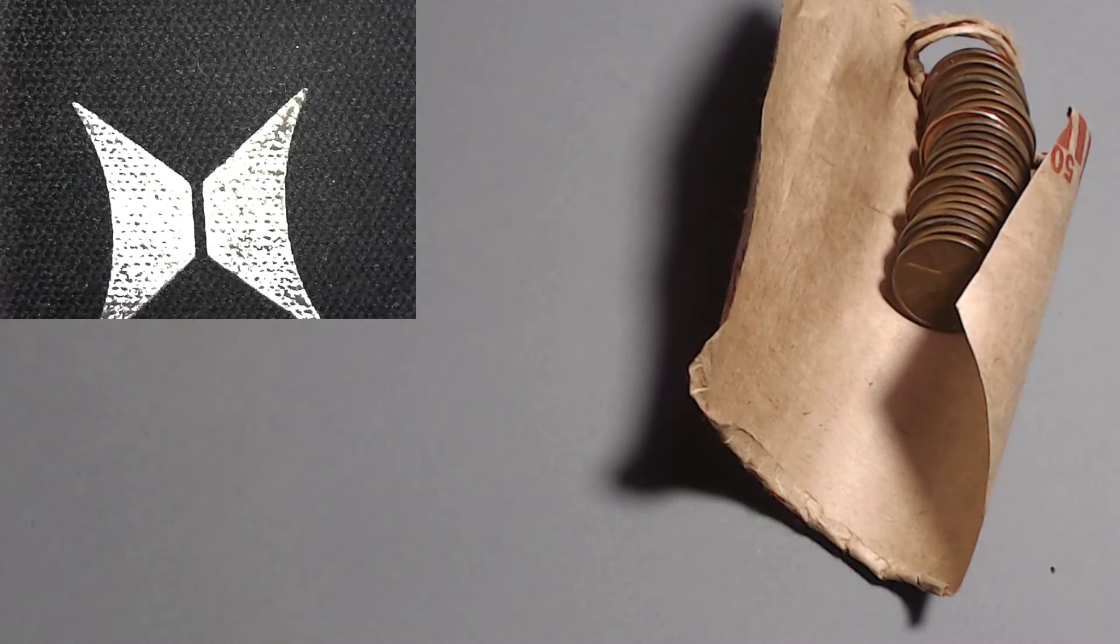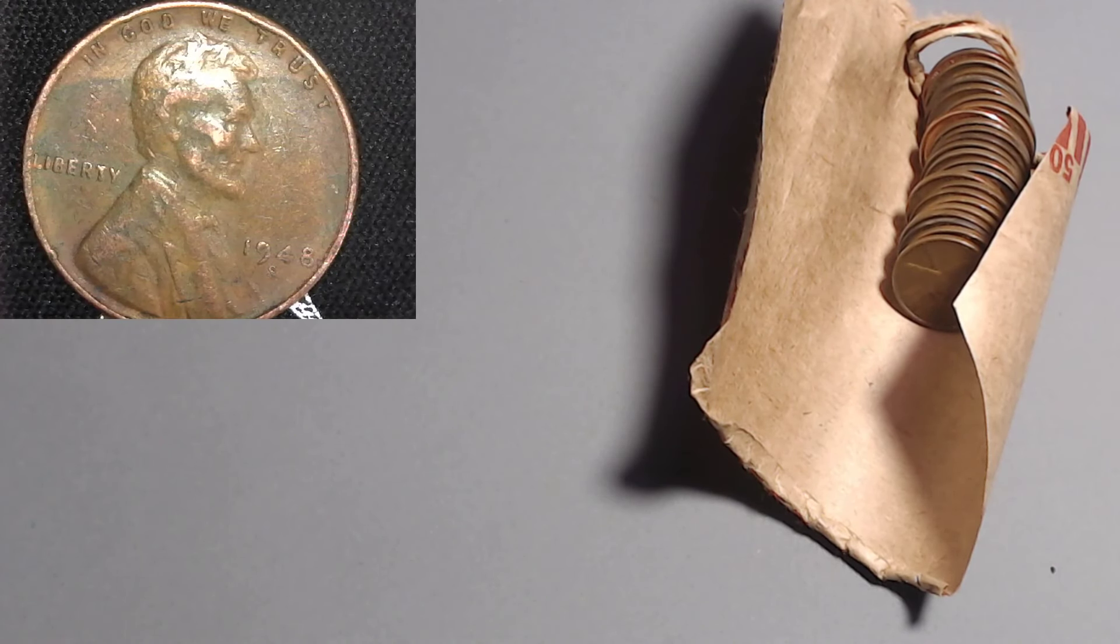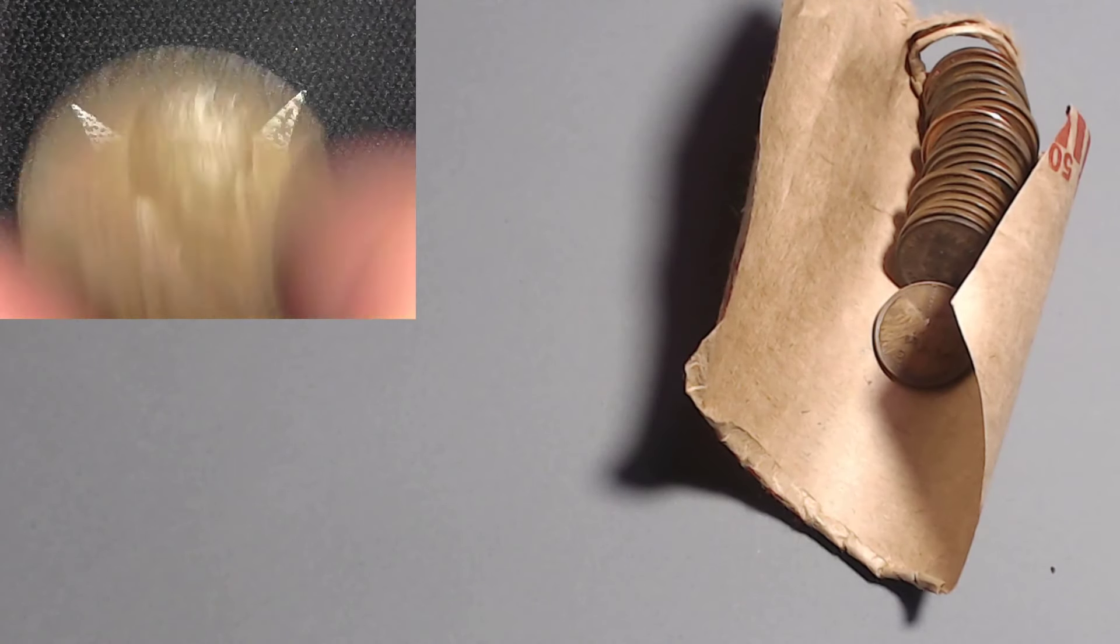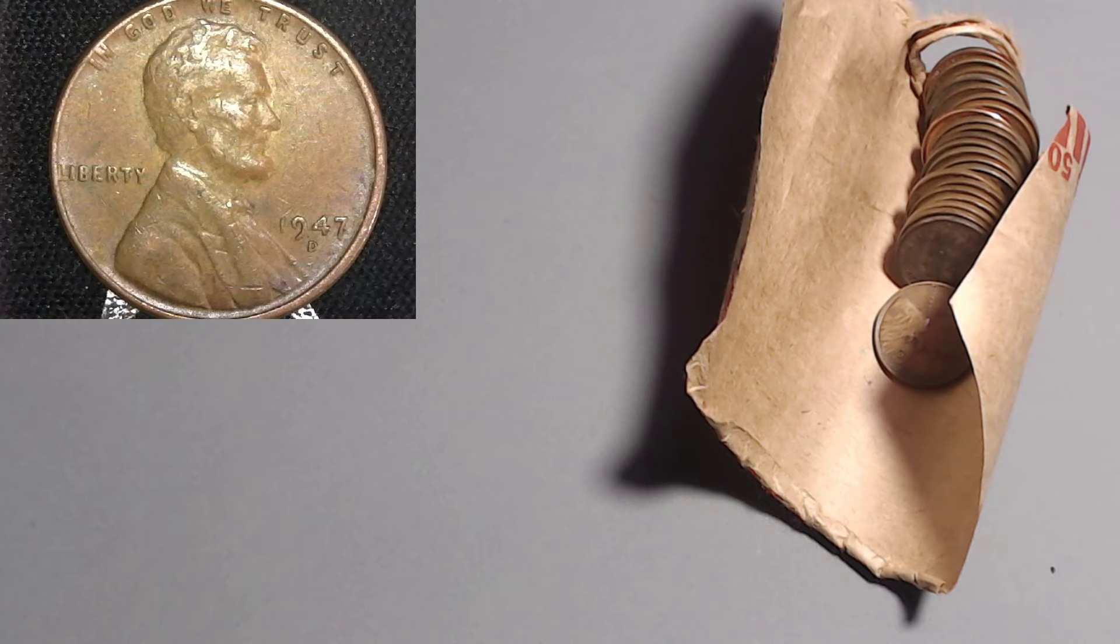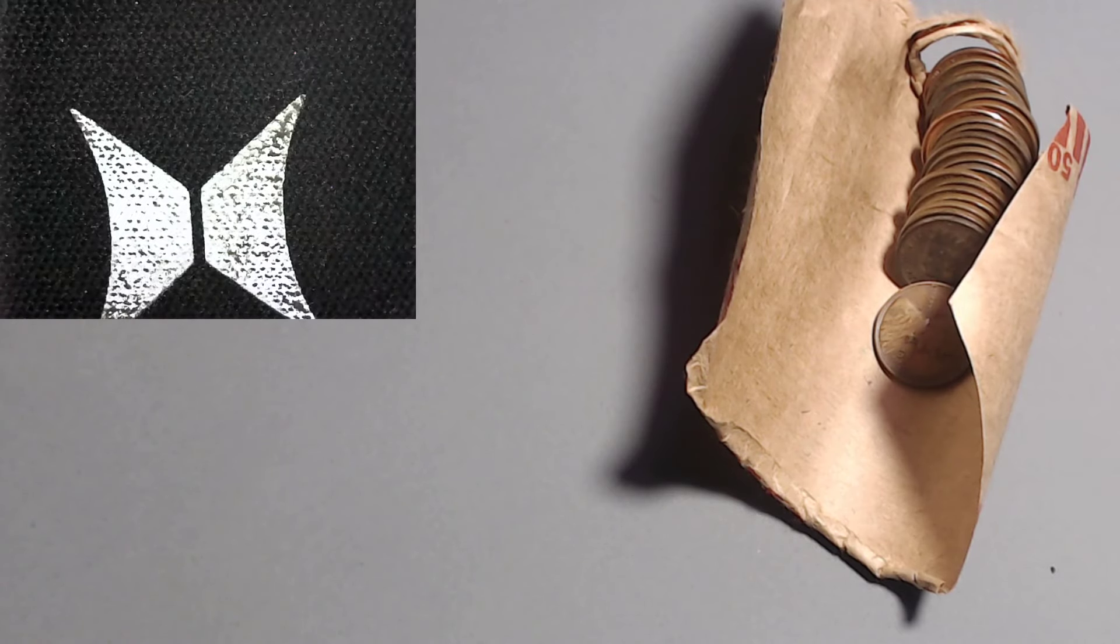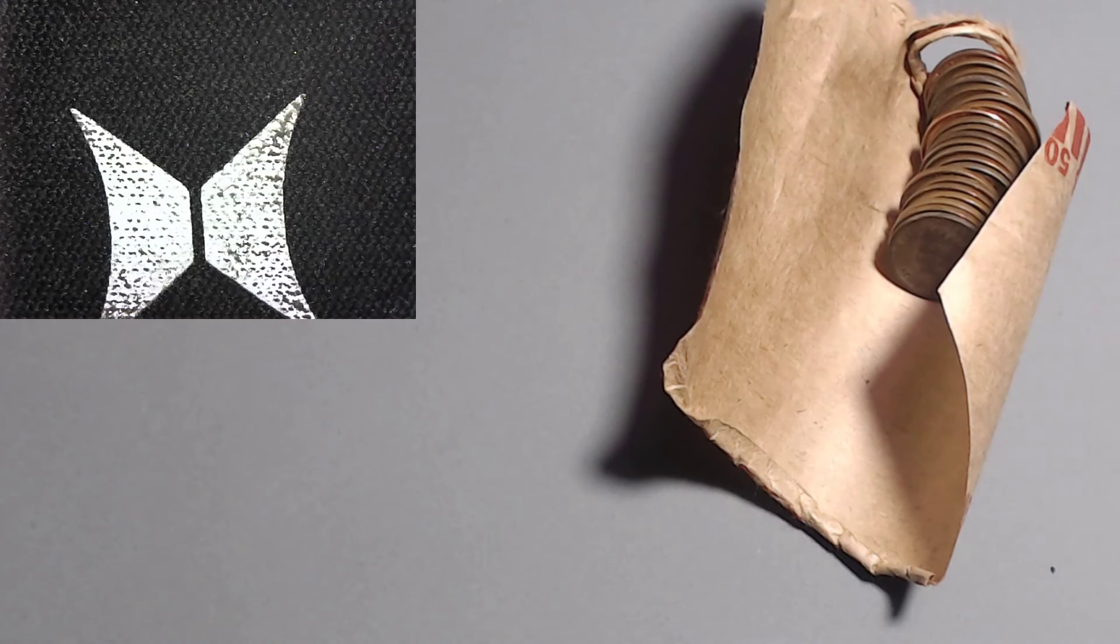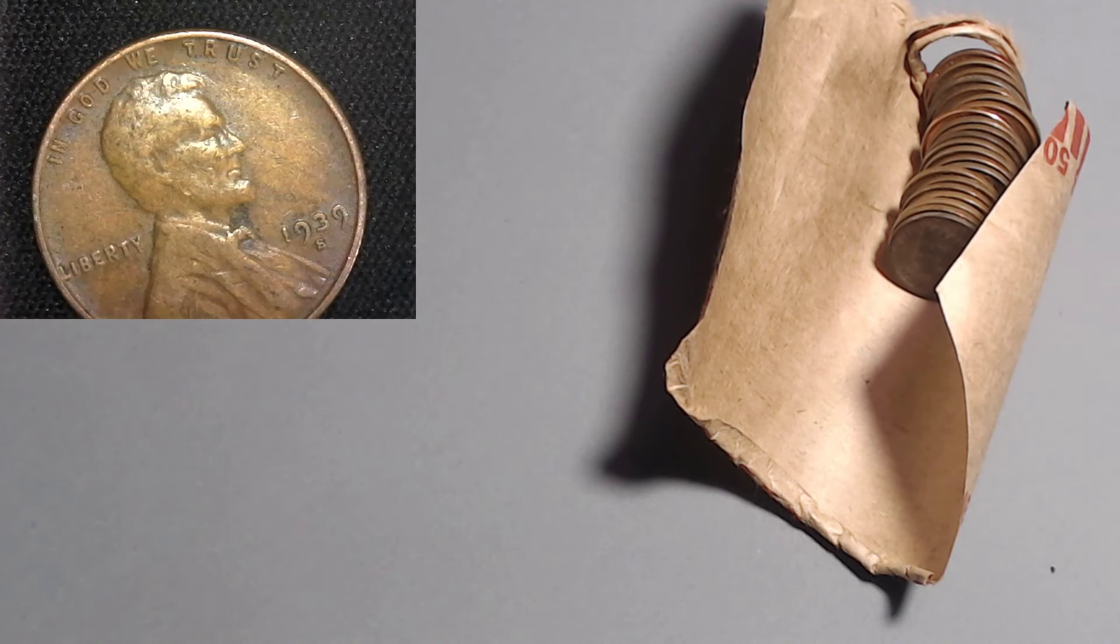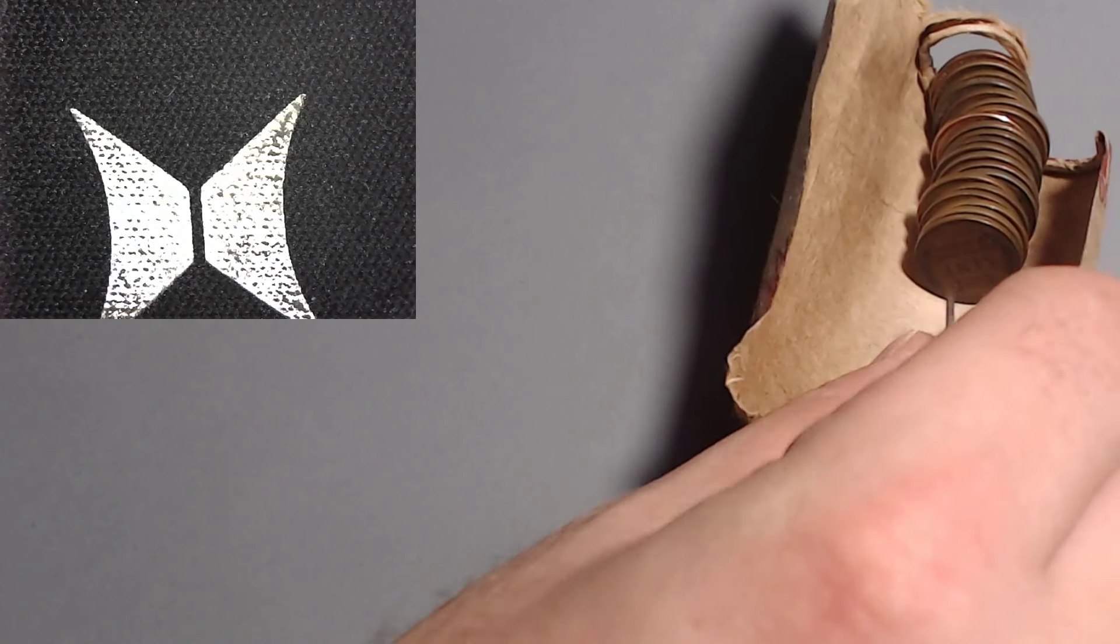Next is the 1948 San Francisco. The 48 S with 81 million. And coming up on the 1947 out of Denver. The 47 Denver with 194 million. I can't even get excited about the common dates. I mean they're wheat cents. But I can't even show excitement because we're finding so many key dates. Now we got the 1939 out of San Francisco. The 39 S, 52 million. I would almost call that a semi-key date. But if you want to get all technical and correct me, you go right ahead.